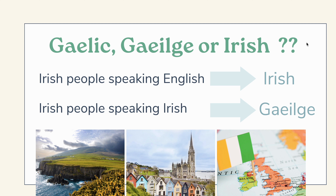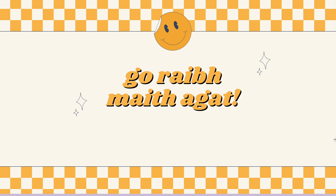So just a quick recap: when Irish people are speaking English, we call it 'the Irish language' or just 'Irish' for short. And when Irish people are speaking Irish, we call it 'Gaeilge.' To hear different pronunciations of Gaeilge, check out the pronunciation links down below. Don't forget to get your free pronunciation guide as well. Go raibh maith agat — thank you. Agus slán go fóill — bye for now!